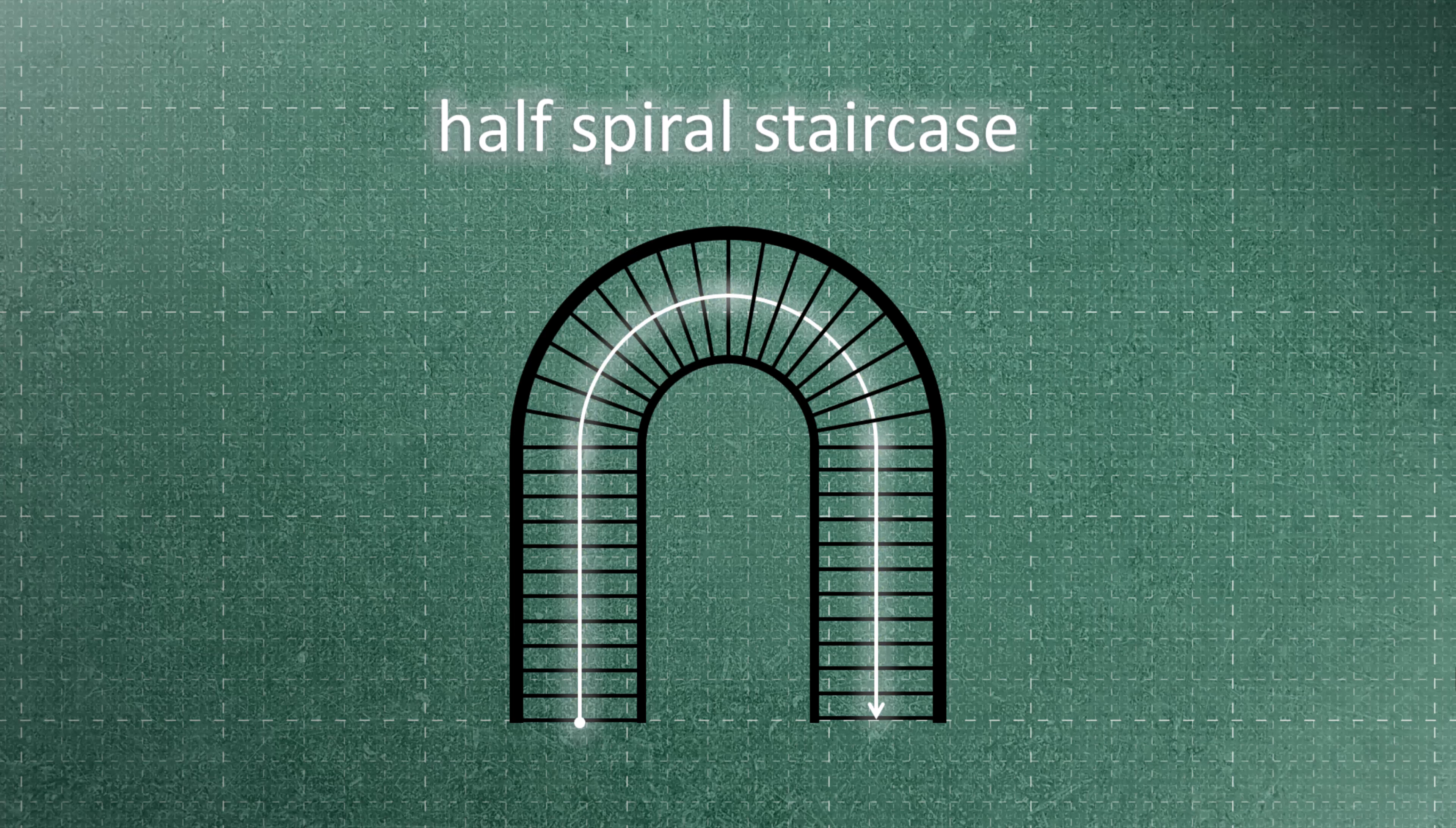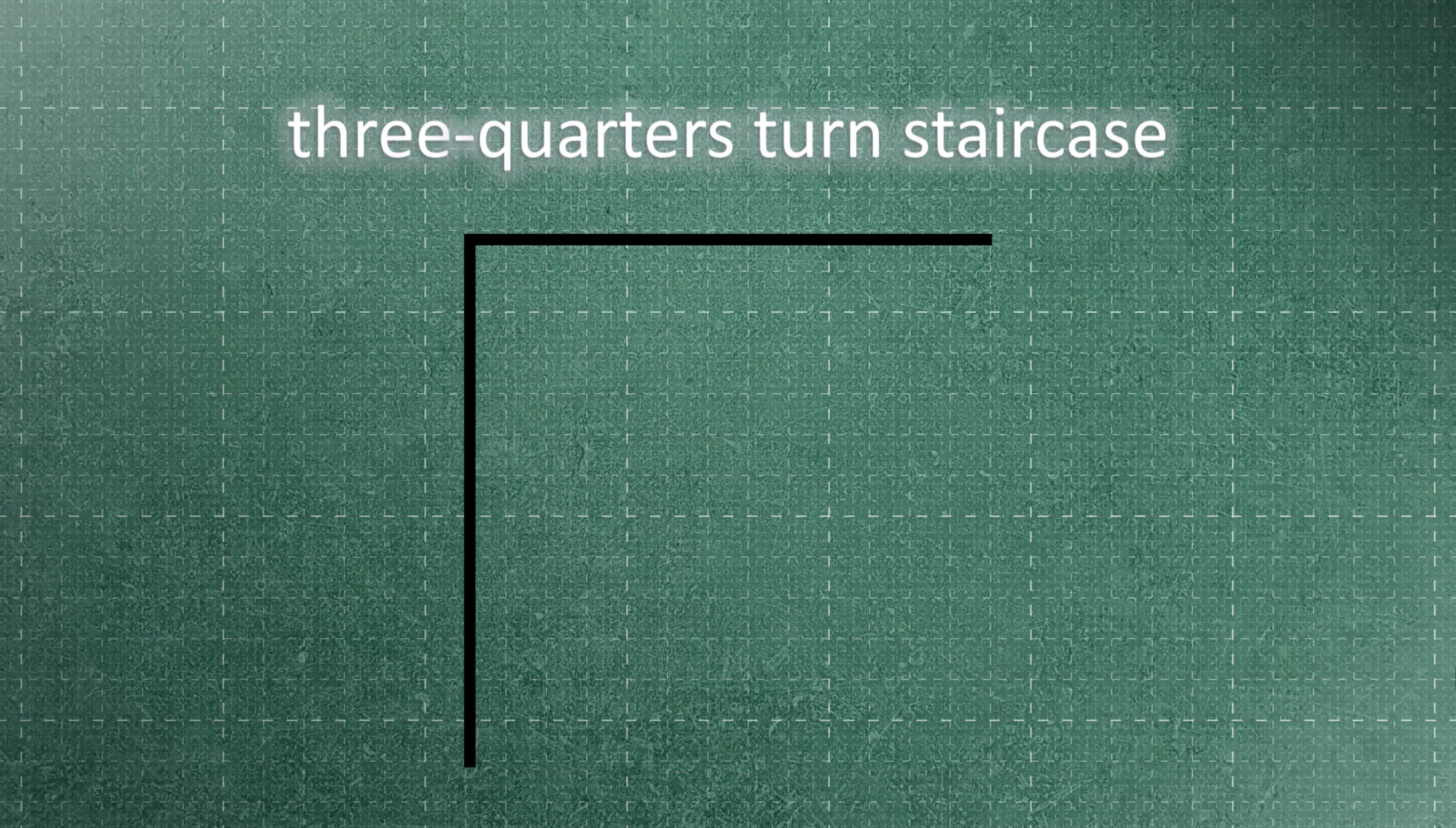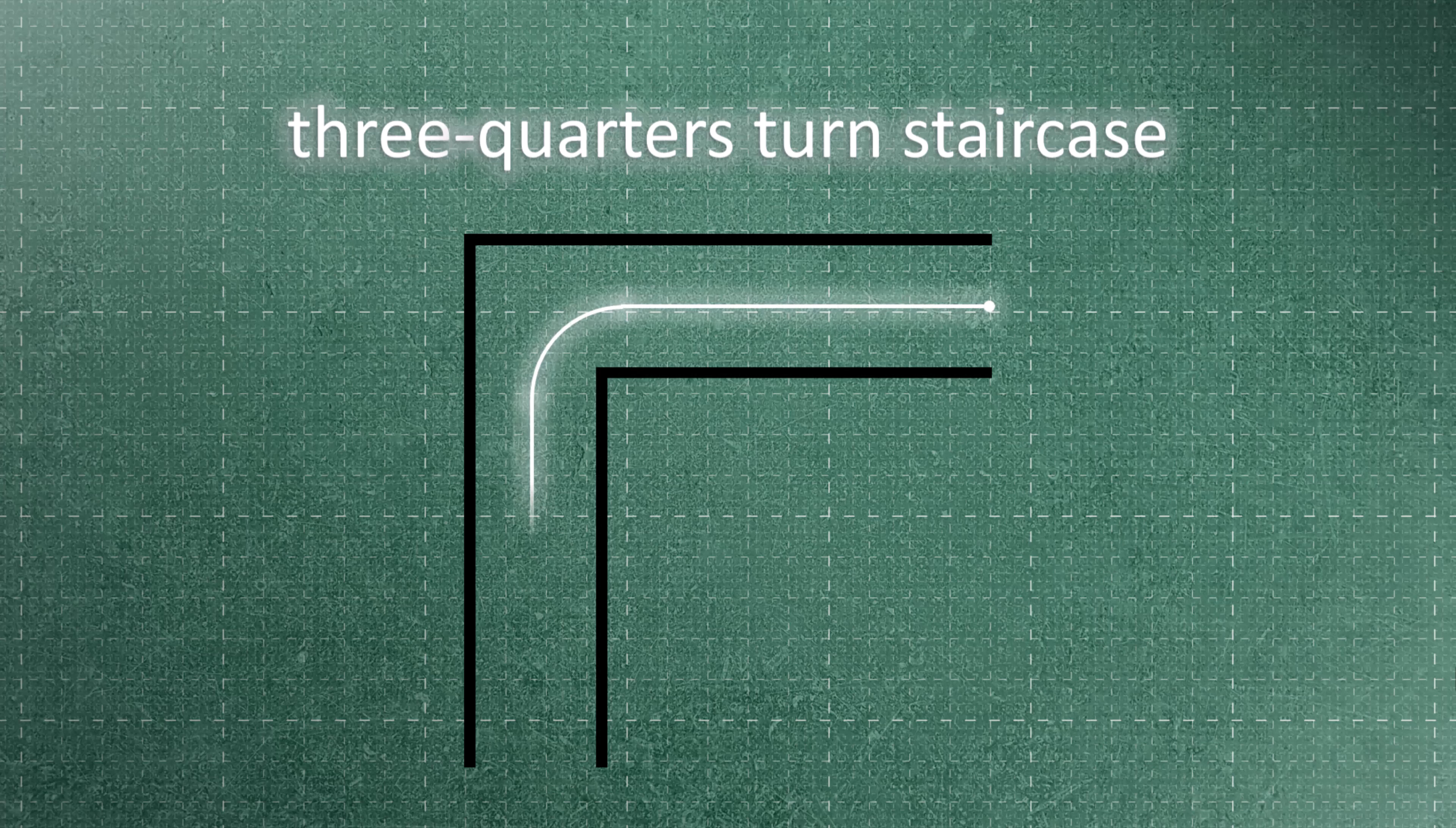To draw a three-quarters turn staircase, begin by sketching a square that encloses the entire staircase. Select two adjacent sides of the square as the primary sides of the staircase and draw the other two sides of the staircase using the desired width. Identify the path line of the staircase and mark it every 30 centimeters.